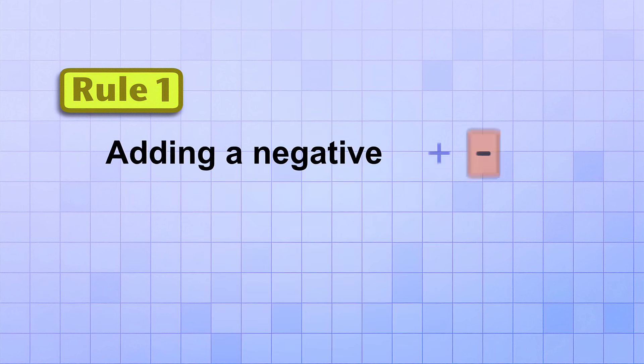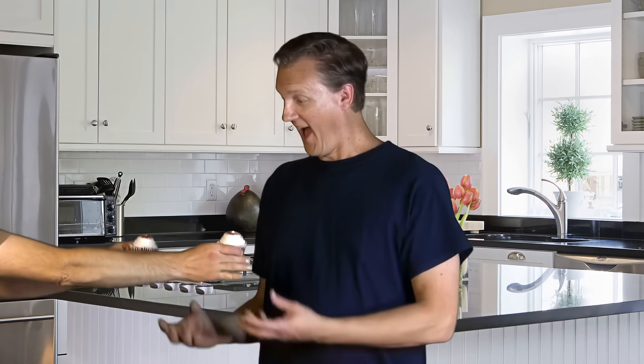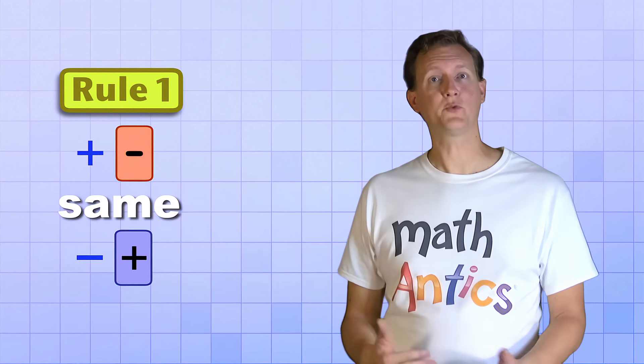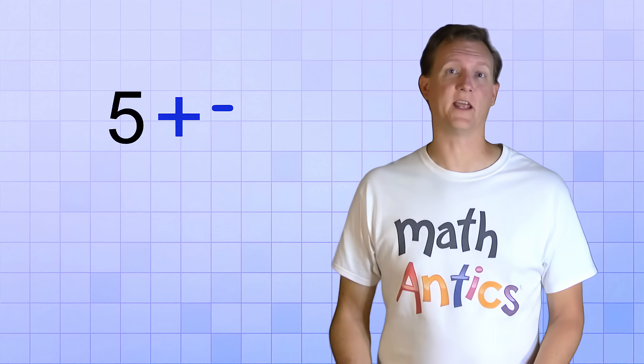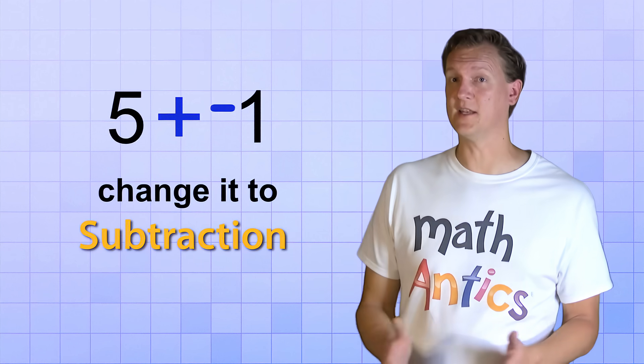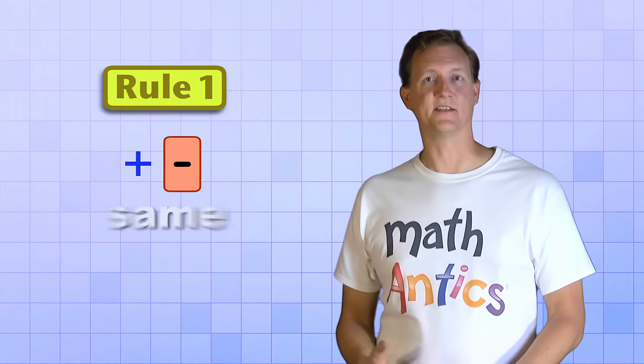Let's start by learning two key rules that are really helpful to know when working with negative numbers. The first rule is: adding a negative is the same as subtracting a positive. To visualize what that means, suppose I give you positive two cupcakes — you'd be pretty happy, right? But what if I give you negative two cupcakes instead? That's the same as taking two cupcakes away from you. In math, this means that if you have a problem like 5 plus negative 1, where you're adding a negative number, you can just change it to subtraction: 5 minus 1. They are different ways of writing the same thing. So rule number 1 is: adding a negative is the same as subtracting a positive.